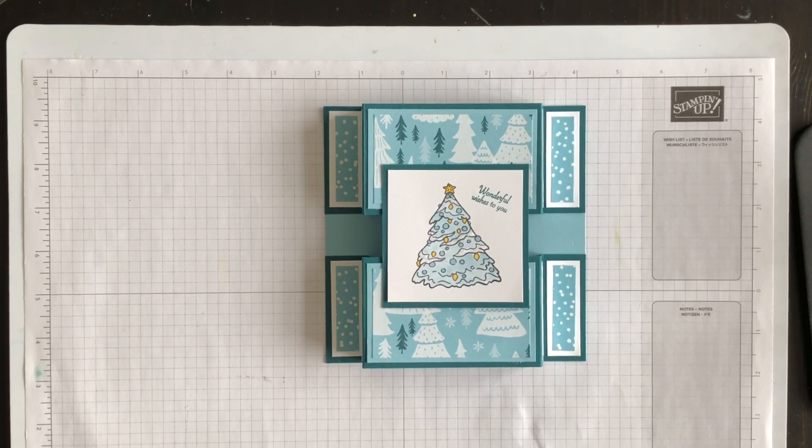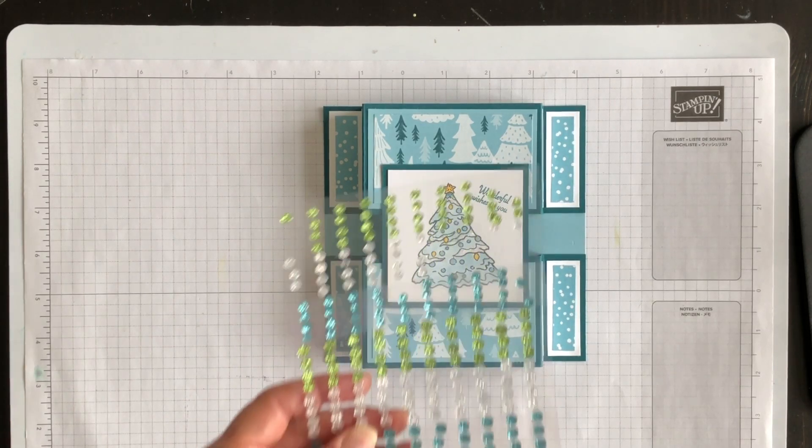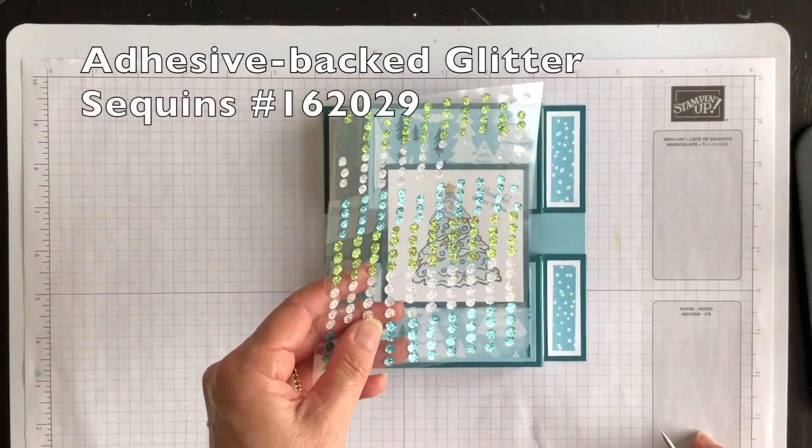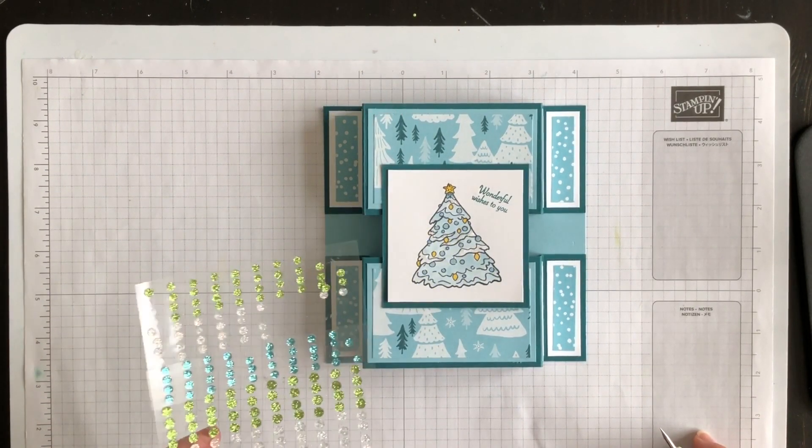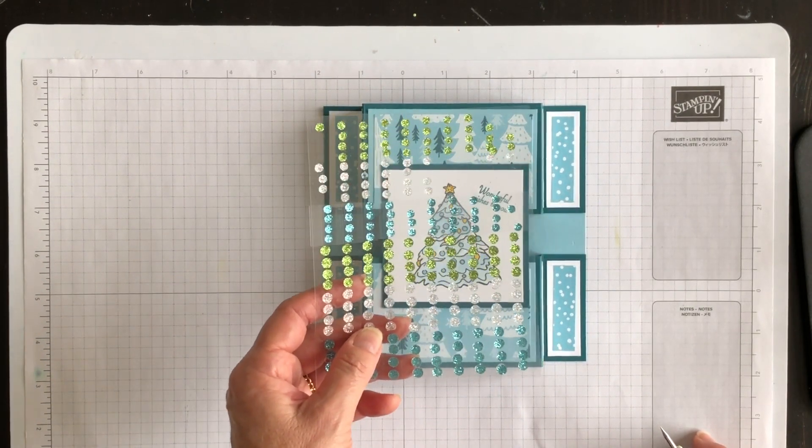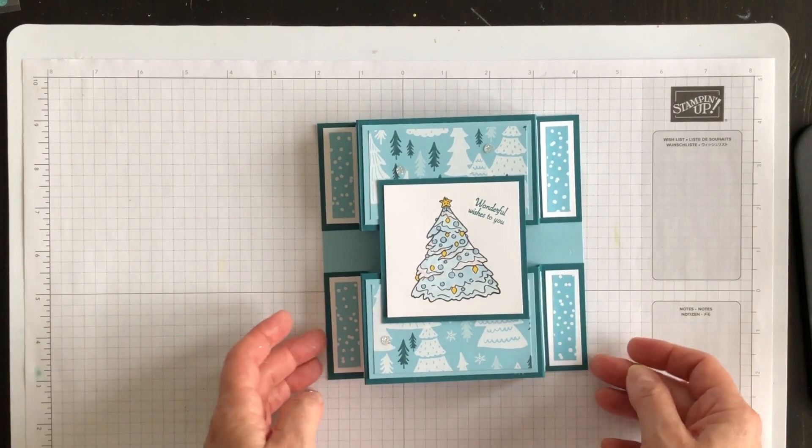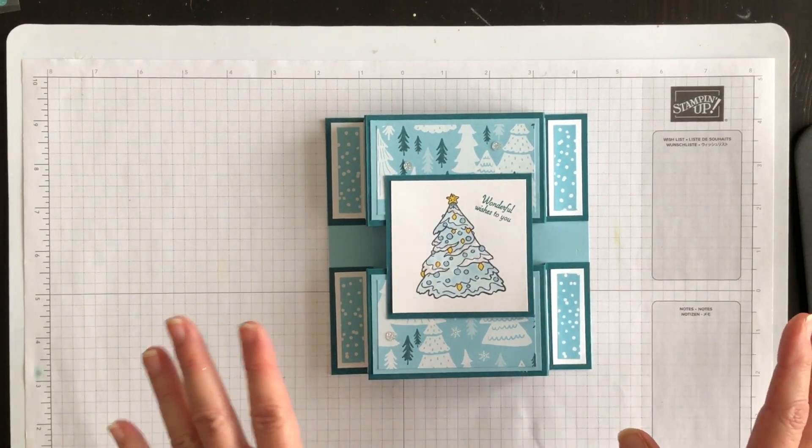So now it's time to talk embellishments. And I think what I'm going to use are these adhesive back glitter dots. I think since we're going with the glitter theme let's add a few of these dots to the card. And there we go the fun fold is almost done.